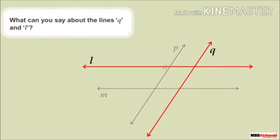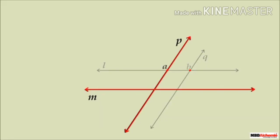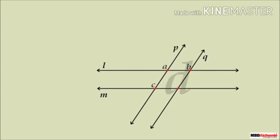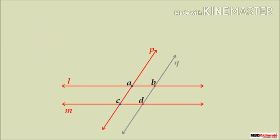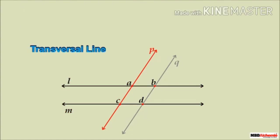Lines Q and L are intersecting each other at point B. Similarly, line P intersects line M at point C, and Q intersects line M at point D. Does line P intersect both lines L and M? Yes, P is intersecting both lines L and M at points A and C respectively. This shows what line P represents — a line that intersects two or more lines at a distinct point is called a transversal. Thus, line P is a transversal line.